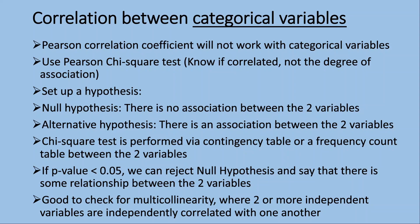With categorical variables, the Pearson correlation coefficient will not work. In this case, we'll have to use the Pearson chi-square test, which will tell you if the variables are correlated, but it will not tell you the degree of association. First, we'll set up a hypothesis. The null hypothesis means there's no association between the two variables, and the alternative hypothesis means there is an association. The chi-square test is performed via a contingency table or a frequency count table. If the p-value is less than 0.05, we can reject the null hypothesis. This chi-square test is a good check for multicollinearity, where two or more independent variables are independently correlated with one another.